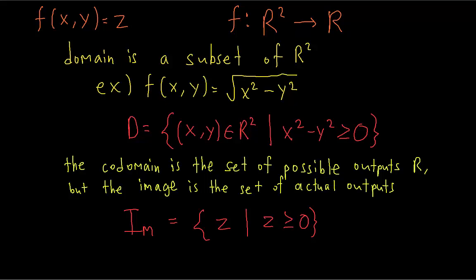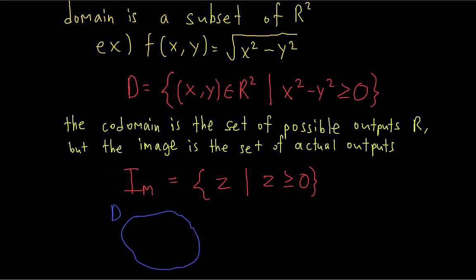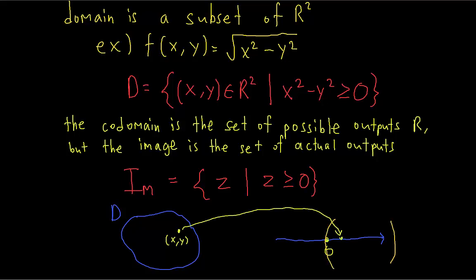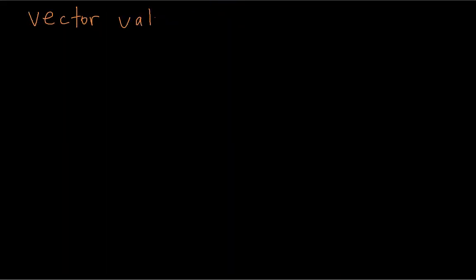We can draw a little diagram from the domain to the codomain. The codomain of the function is the real number line R, but the image is all of the real numbers greater than or equal to zero. We will also be dealing with functions that are not real-valued. Real-valued functions means you get a real number as the output. We will also see vector-valued functions, which means you plug in some numbers and then you get a pair or a triple of numbers as the output.